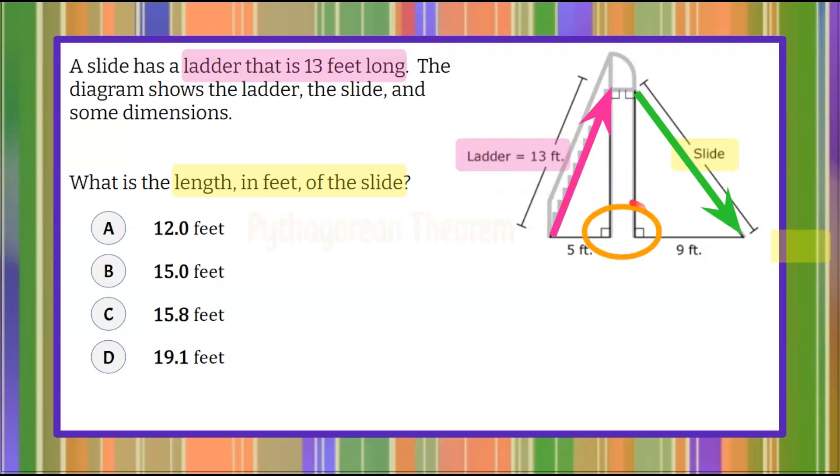We know that we have two right triangles that are formed here. So when we go up the ladder and we come straight down by the supports of that ladder, we can see that we're forming a right angle. And when we have our slide, we can see there's another support here forming another right angle.